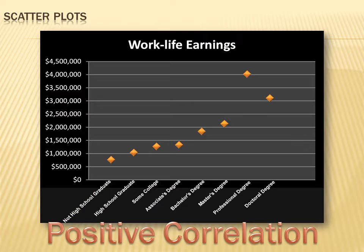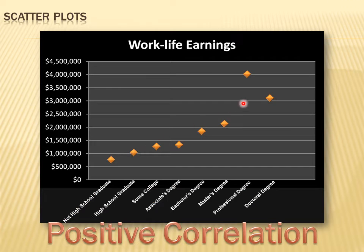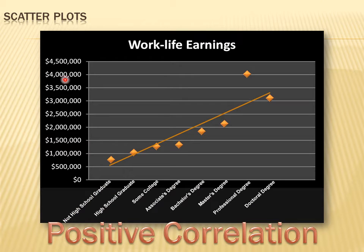We may be able to see a relationship between the variable on the x-axis and the variable on the y-axis. In this case, as the amount of education increases, the amount of income you'd anticipate over your lifetime increases. The line goes up from the bottom left to the upper right — a best-fitting line. What we have is a positive correlation: as the x-value increases, the y-value increases, and as the x-value decreases, the y-value decreases.